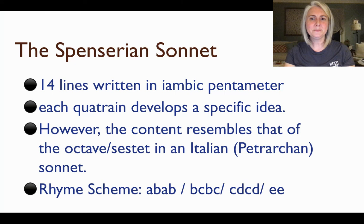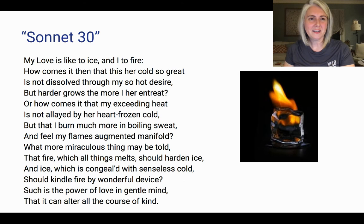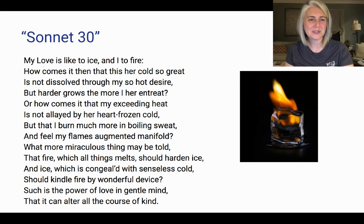Sonnet 30 is usually what I start with to get people introduced. I love this sonnet — it involves a lot of paradoxes or opposites and is a very clever poem. It reads: 'My love is like to ice, and I to fire. How comes it then that this her cold so great is not dissolved through my so hot desire, but harder grows the more I her entreat? Or how comes it that my exceeding heat is not allayed by her heart frozen cold, but that I burn much more in boiling sweat, and feel my flames augment and manifold? What more miraculous thing may be told, that fire which all things melts should harden ice, and ice which is congealed with senseless cold should kindle fire by wonderful device? Such is the power of love in gentle mind that it can alter all the course of kind.'